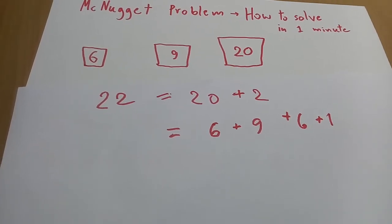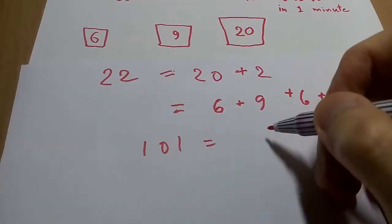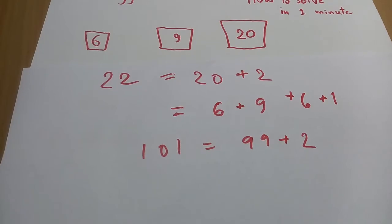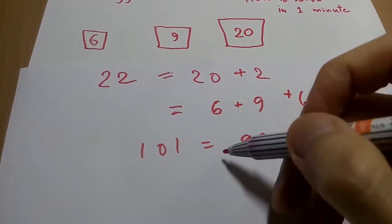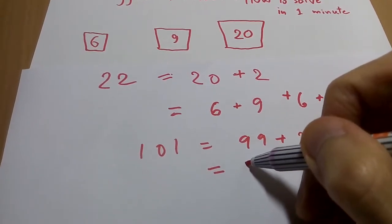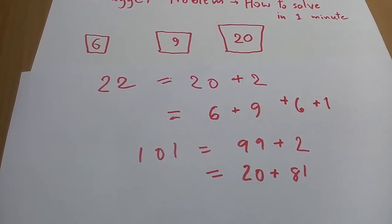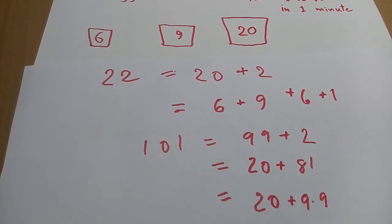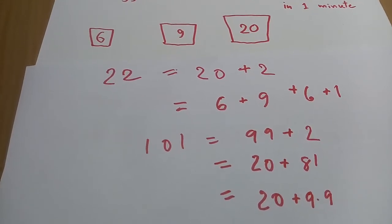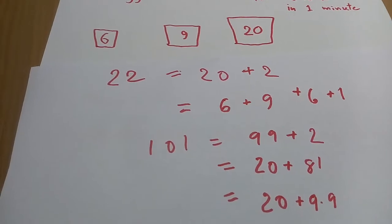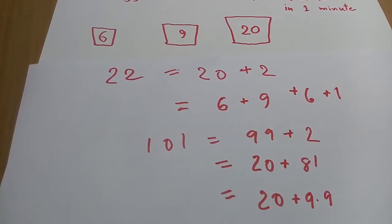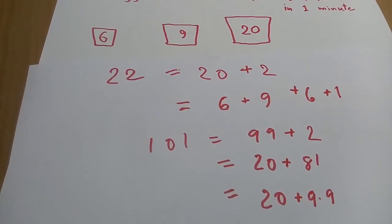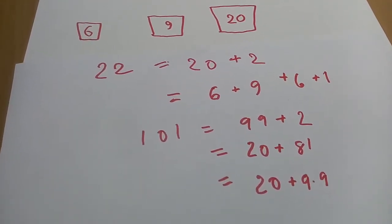For example, taking 101, you have 101 equals 99 plus 2. Which number has a remainder of 2 when divided by 3? Twenty. So we can rewrite it as 101 equals 20 plus 81, which is a multiple of 3. Let me rewrite it as 20 plus 9 times 9, which will be 9 boxes of 9 nuggets plus one box of 20 nuggets. See, once the number gets larger, the multiples can cover all the factors and the remainder, so it's obviously not gonna reach infinity.